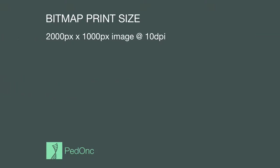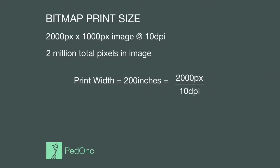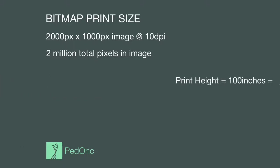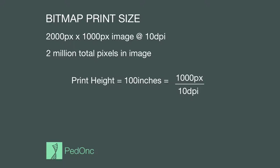Let's look at another example. Imagine a bitmap image that is 2,000 pixels wide by 1,000 pixels tall at 10 DPI. This bitmap would have 2,000,000 total pixels — many more than our first image — but with a significantly smaller DPI of 10 versus the first example's 200. The print width would be 2,000 divided by 10, giving 200 inches. The print height would be 1,000 divided by 10, giving 100 inches. It's possible to set the DPI for any image as large or small as desired, regardless of the number of pixels.